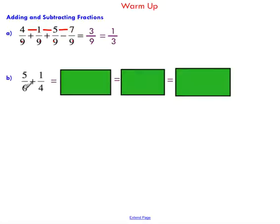But what happens when you don't have a common denominator? Here I've got 6 and 4 — not common — so I cannot simply add straight across. You have to look at your denominators and find the lowest common denominator between these two numbers. If you think about the multiples of 6 and 4, you'll see that the lowest common multiple would be 24.